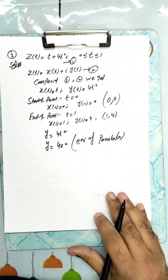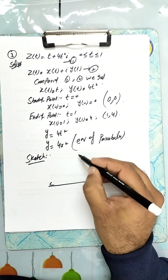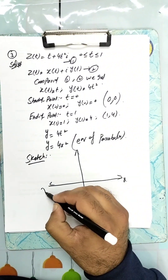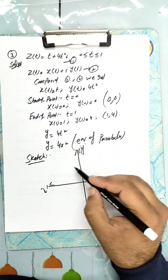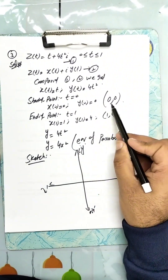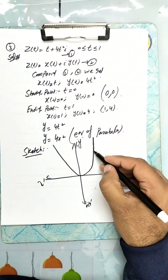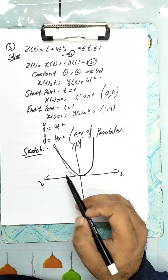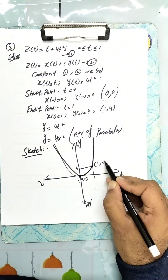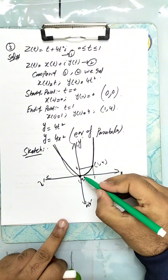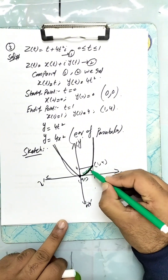Eliminating the parameter t: since x equals t, substituting into y equals 4t² gives y equals 4x², which is the equation of a parabola. We sketch this parabola passing through the origin (0, 0). We mark x equals 1 and y equals 4 as the ending point (1, 4). The portion of the parabola from (0, 0) to (1, 4) is our path.